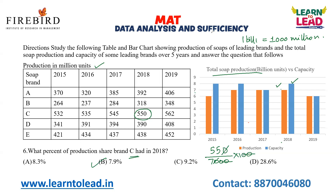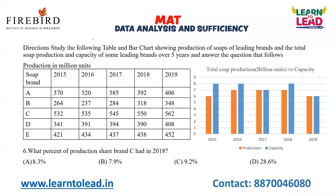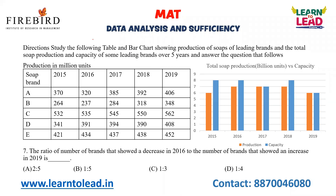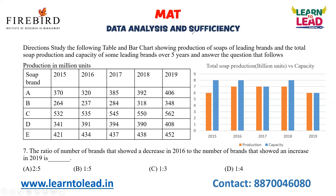The ratio of the number of brands that showed a decrease in 2016 to the number of brands that showed an increase in 2019: brands A and B showed a decrease in 2016 — that is 2 brands. For 2019, when compared to 2018, brands A, B, C, D, and E all 5 brands showed an increase. So 2 is to 5 is the ratio — option A is your answer.